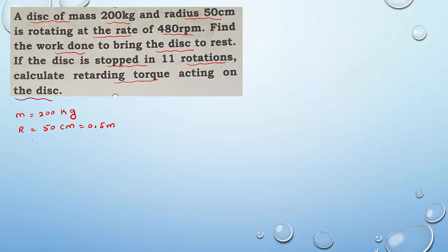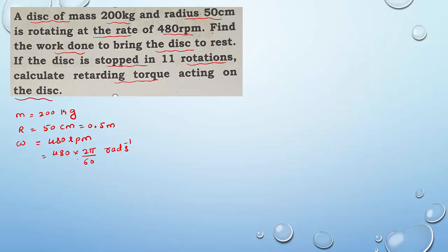It is rotating at the rate of 480 rpm, given in terms of revolutions per minute. So rotational speed omega is 480 rpm. We can write 480 rpm as 480 into 2π radian per revolution, divided by 60 seconds per minute, to convert into radian per second. So this is the value of omega.